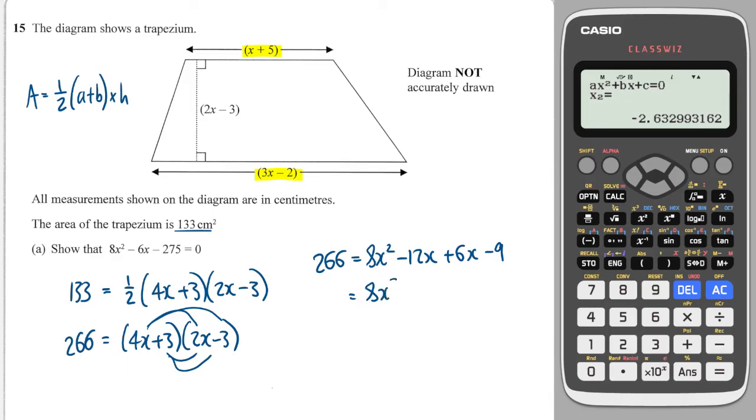So, simplifying gives me 8x squared minus 6x minus 9, and then setting it equal to 0, I'm going to minus 266, and that's going to give me minus 275.